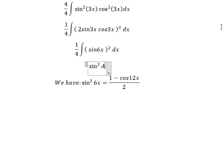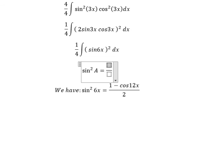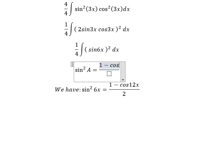Sin²A = (1 - cos 2A)/2. A should be 6x. That's why we have 6x multiplied with number 2.